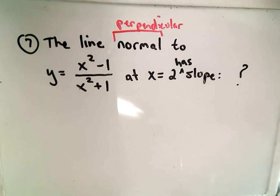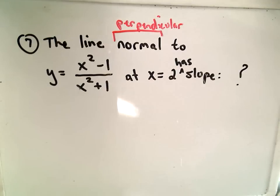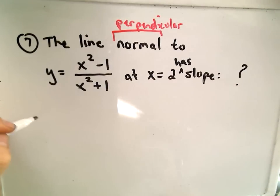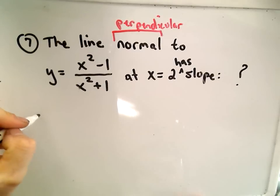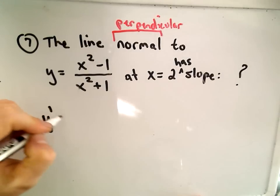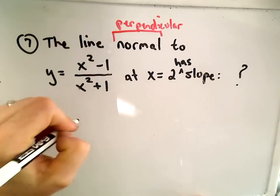We know how to find perpendicular slopes — you just change the sign and flip the fraction on the slope of the tangent line. So the first thing we'll have to do is find the slope of the tangent line, and to do that we'll just take the derivative.